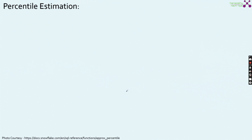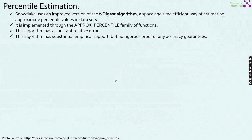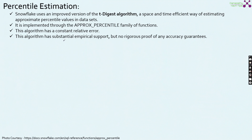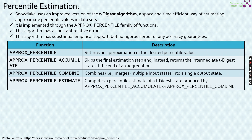Moving on to percentile estimation. Here we discuss how percentile estimation can be calculated. It uses the T-digest algorithm — a space and time efficient way to estimate percentile values in each data set. It is again implemented through the APPROX_PERCENTILE family of functions. This algorithm has a relative error, and importantly, the algorithm has substantial empirical support but no rigorous proof of any accuracy guarantees. The four functions are: APPROX_PERCENTILE, APPROX_PERCENTILE_ACCUMULATE, APPROX_PERCENTILE_COMBINE, and APPROX_PERCENTILE_ESTIMATE.